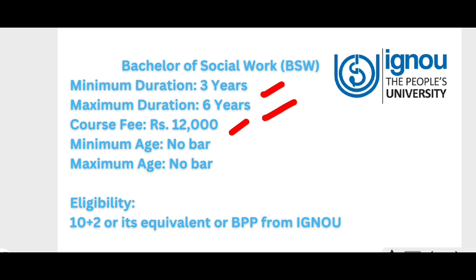One important thing to note: if you have studied up to 5th, 6th, 8th, or 10th and left school, but now want to go to college and graduate, that would normally take many years — for example, completing 9th, 10th, 12th takes about 4 years, then 3 years of graduation totaling 7 years. So IGNOU has designed a bridge gap course for candidates who have a gap in their education. This one-year course teaches you the basics to prepare you for graduation, so after completing it you can directly take admission into graduation, saving you significant time.